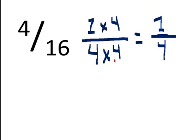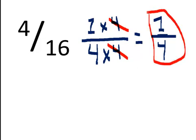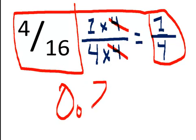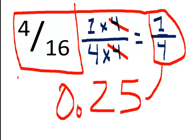Give it a whirl. Let's see how you did. 4 can be factored as 1 times 4, and it can also be factored as 2 times 2. And 16 can be factored as 4 times 4. So this 4 cancels with that 4, and that leaves us with 1 fourth left over. So 4 sixteenths and 1 fourth are at the same place on the number line. If you did the long division, you'd get 0.25 for both of them.